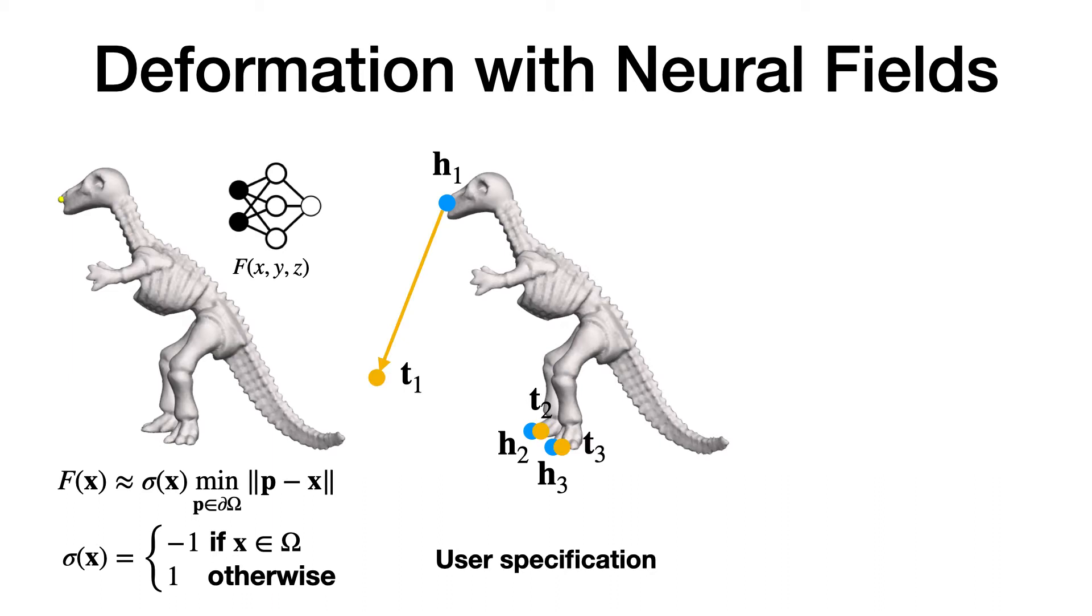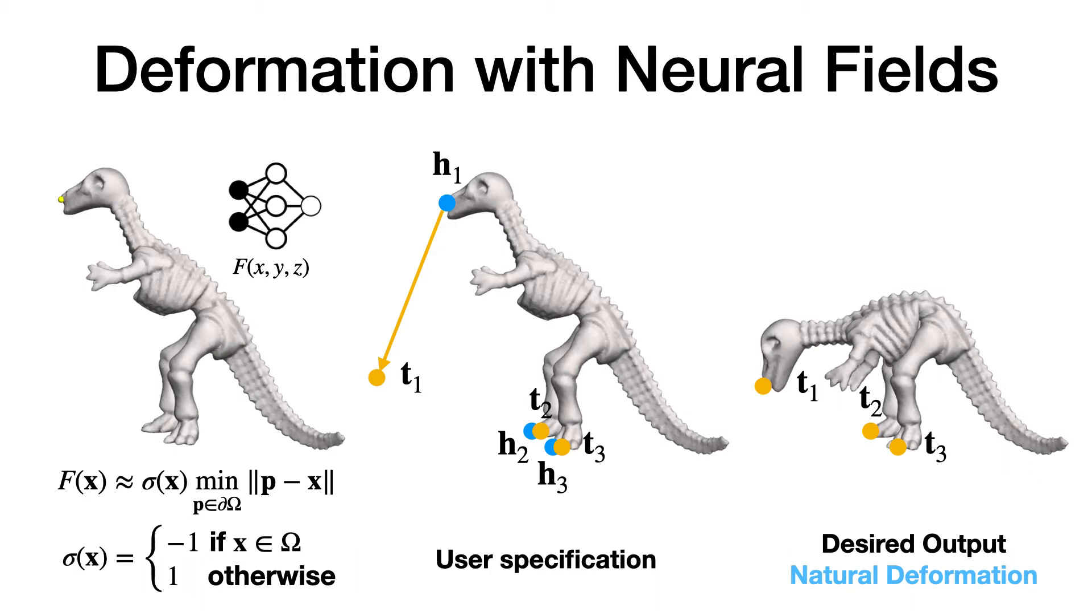For each handle point, the user will further specify a target point, indicating where the user wants the handle point to land after deformation. Note that the target point can be the same as the handle point, indicating that the handle stays static. With this, the algorithm should output a neural field whose zero-level set is the shape that not only satisfies user specification, but also resembles natural deformation.